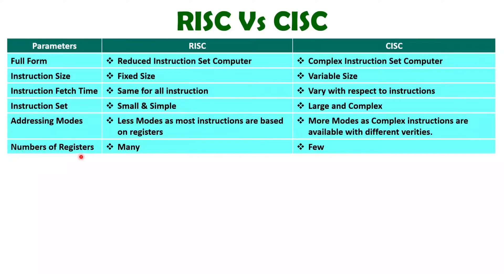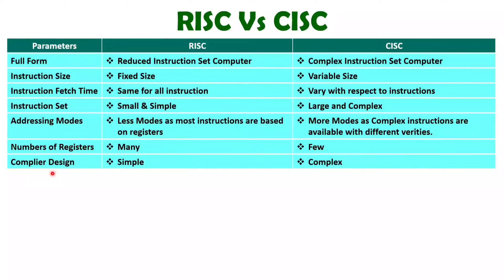When you talk about number of registers, then obviously with RISC architecture you will be having many registers on a single chip, and with CISC architecture, number of registers are less. When you talk about the compiler, then designing of compiler with RISC architecture is simple, because we have less number of instructions and those are simple. But compiler design with CISC architecture will be complex, because number of instructions are more and those are complex. So compiler design will be complex with CISC architecture.